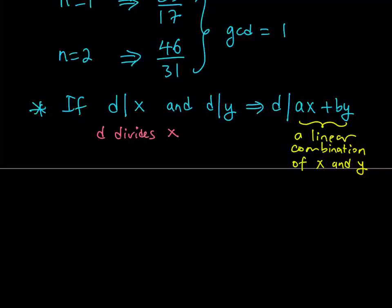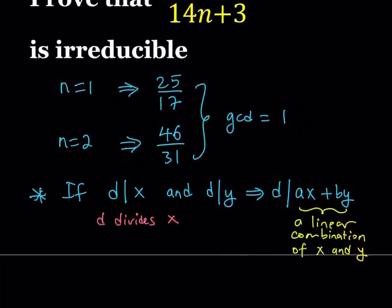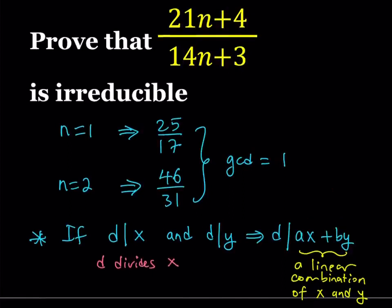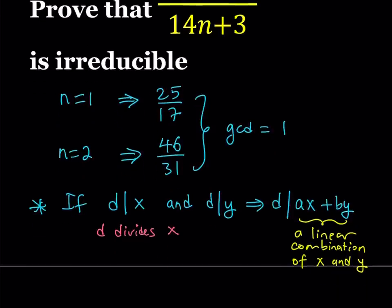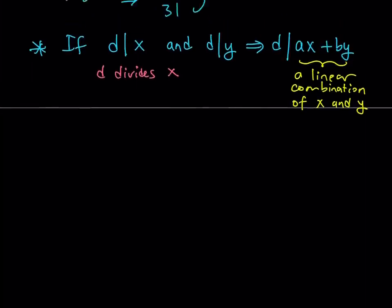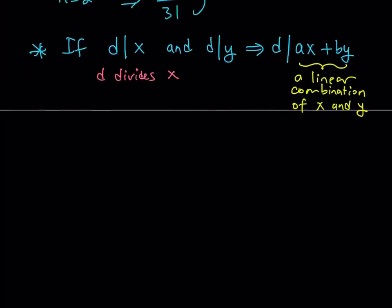So, now let's see how we can use this property in our example and see how we can prove that this fraction is irreducible. And again, proving this fraction irreducible means that the numerator and the denominator have no common divisors besides 1. So, in other words, we're going to prove that the GCD of the numerator and denominator is 1. How do you go about that? Well, we're going to start by letting D equals the GCD of the numerator and the denominator, which is 21n plus 4 and 14n plus 3.